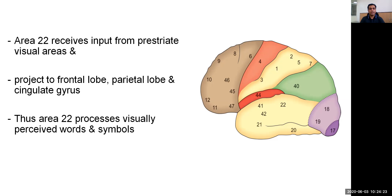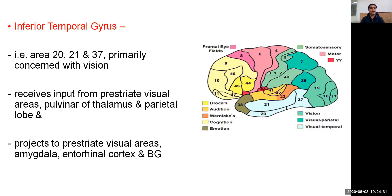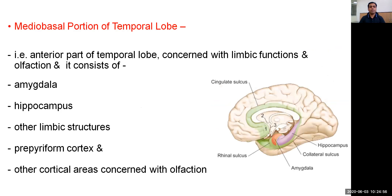The inferior temporal gyrus — areas 20, 21, and 37 — is concerned with vision. It receives input from peristriate visual areas, the pulvinar of the thalamus, and the parietal lobe, and projects back to peristriate visual areas, amygdala, and entorhinal cortex. The mediobasal portion of the temporal lobe is concerned with limbic function and olfaction, consisting of the amygdala, hippocampus, other limbic structures, piriform cortex, and other cortical areas concerned with the sensation of olfaction.